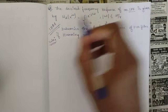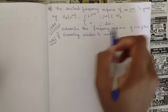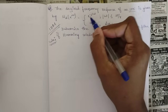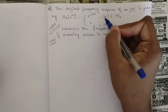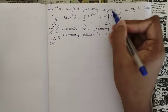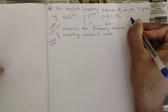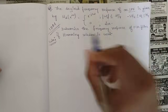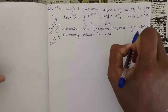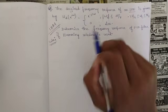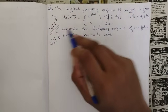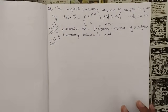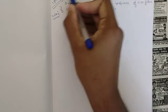The problem: The desired frequency response of a low-pass filter is given as HD(ω) = e^(−j3ω) for |ω| ≤ 3π/4, and 0 otherwise. Determine the frequency response of an FIR low-pass filter using the Hamming window. Note that the filter length is not directly given — you must derive it from the formula.